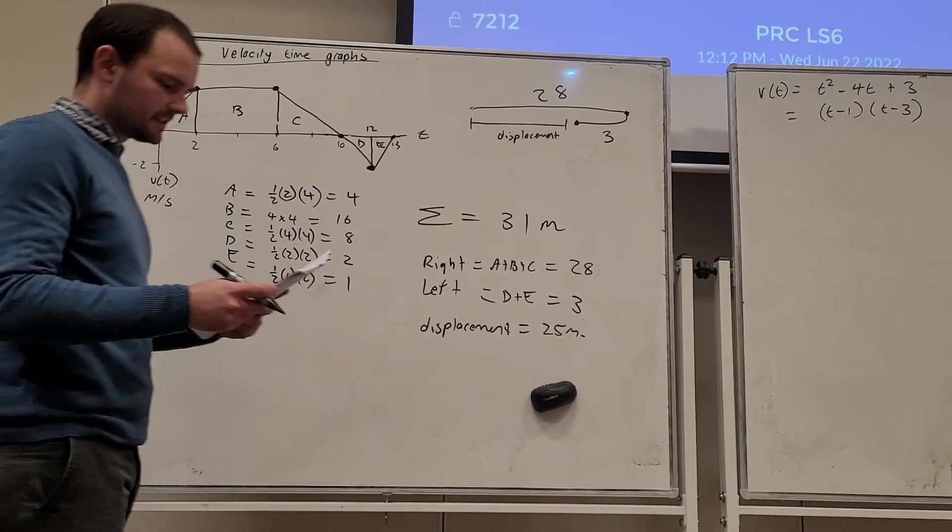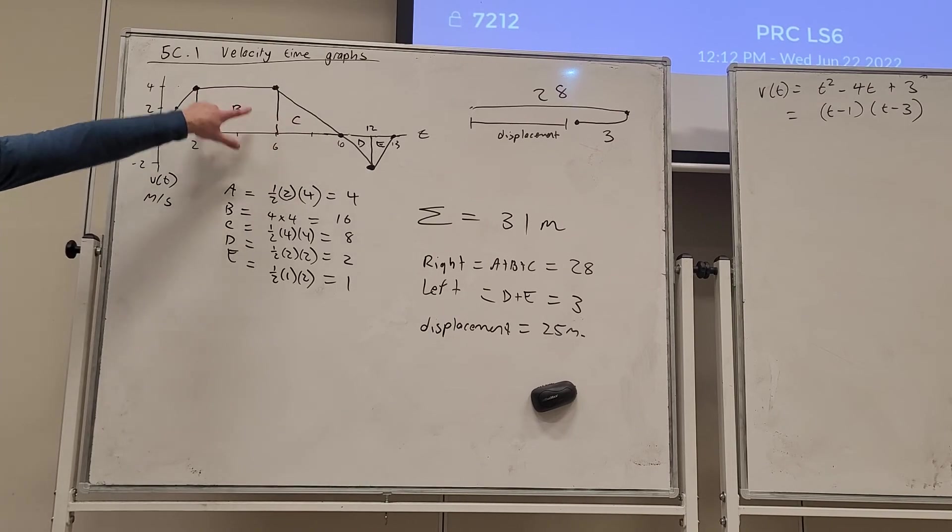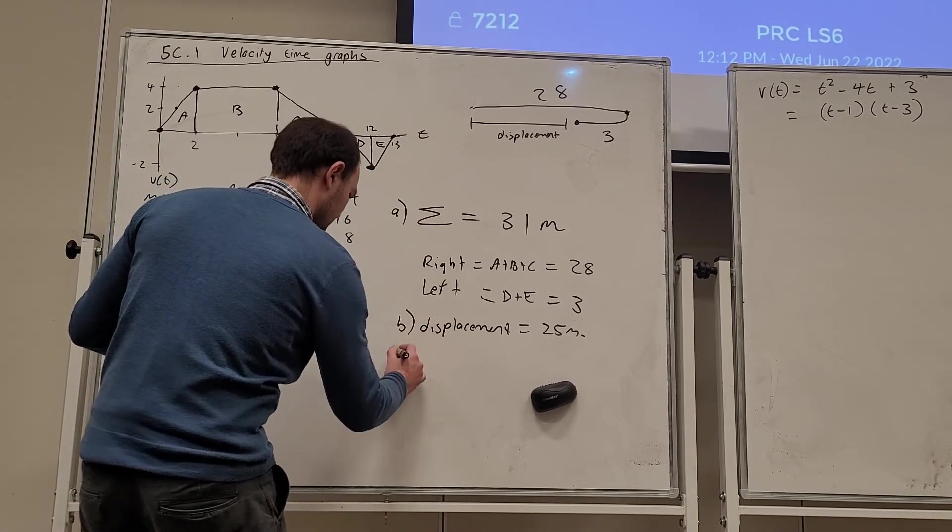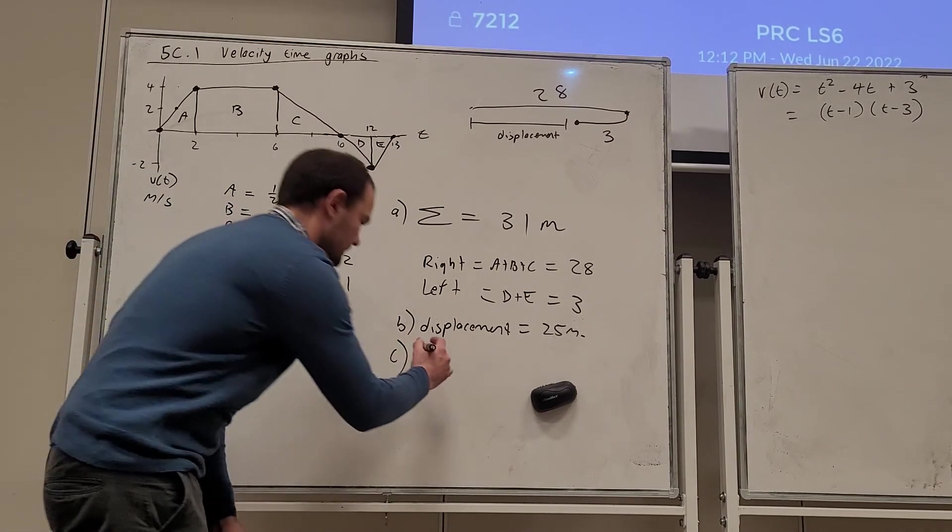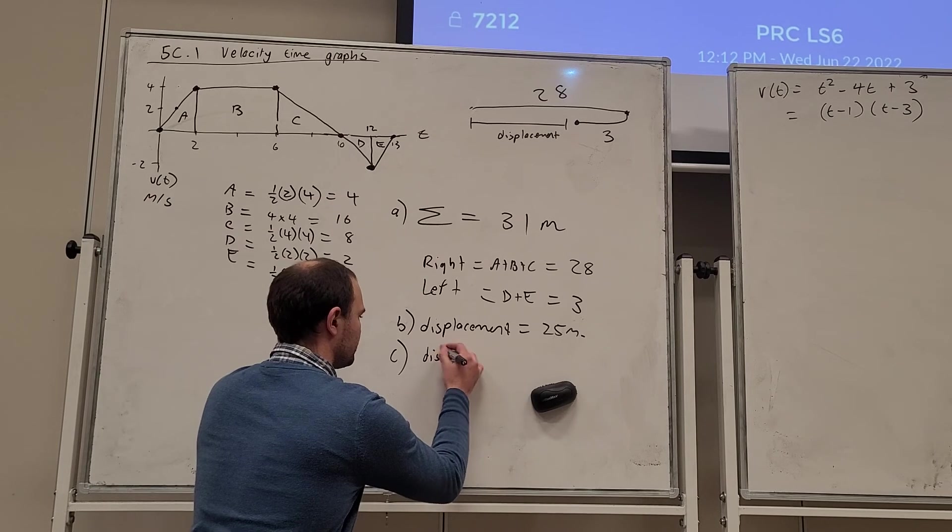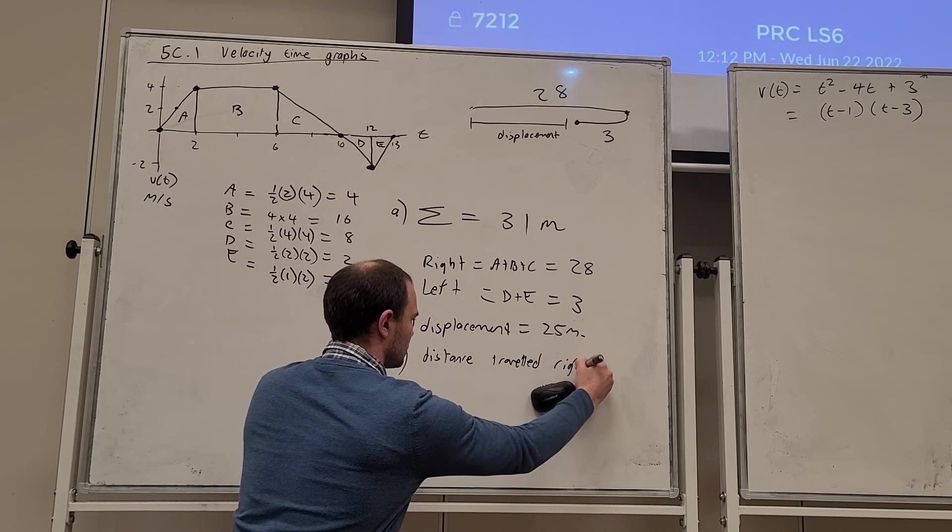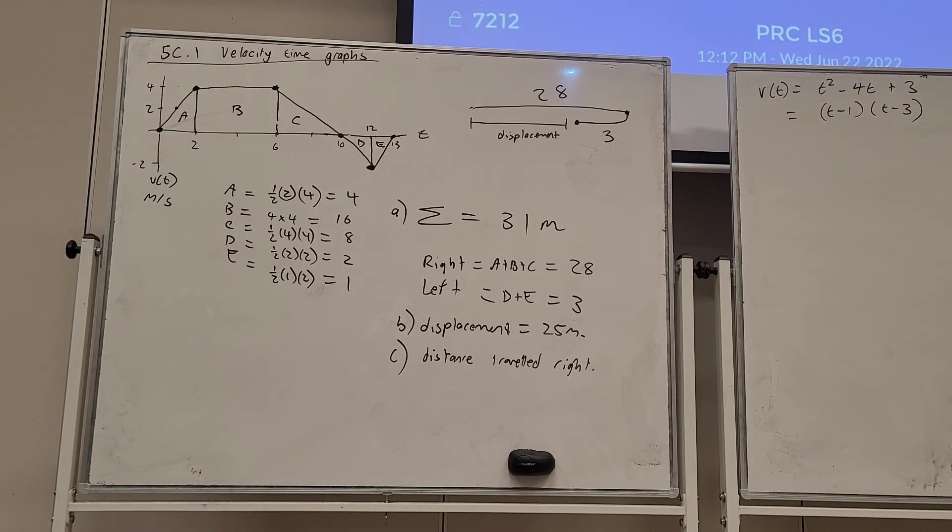What is the significance of the total area above the x-axis? So A, B and C. What's the significance of that? Here's answer A, here's answer B. That's answer C. The area above the x-axis is distance to the right. There we go. Excellent.